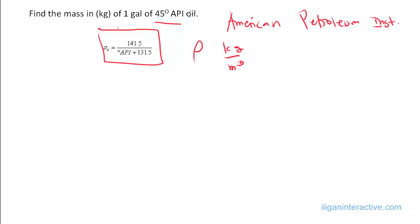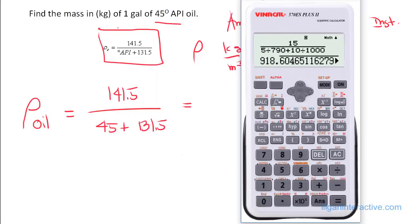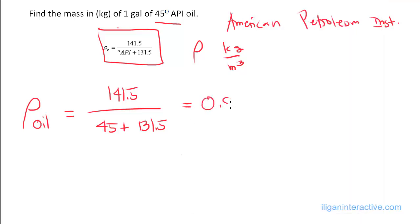Actually in reality, a 45-degree API is a low density oil, or a light oil. Let's find the density of our oil by plugging into this formula: 141.5 over (45 plus 131.5). Doing the math, we get 0.802.